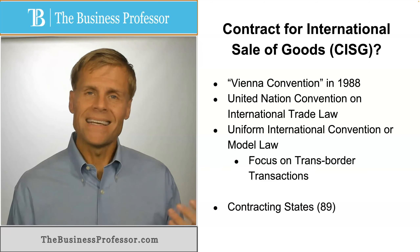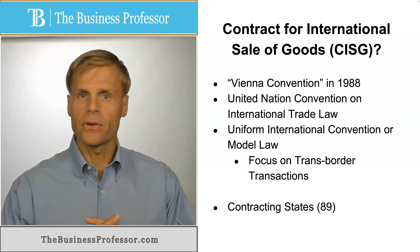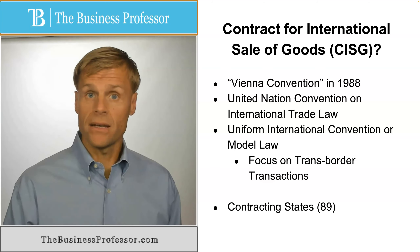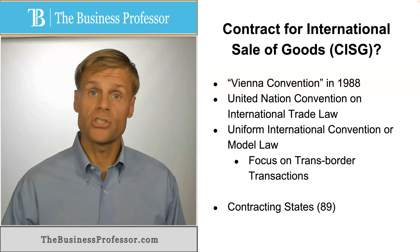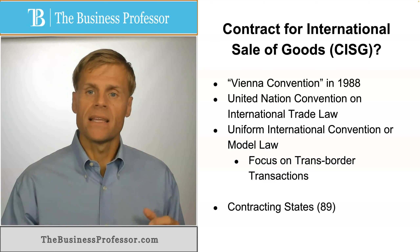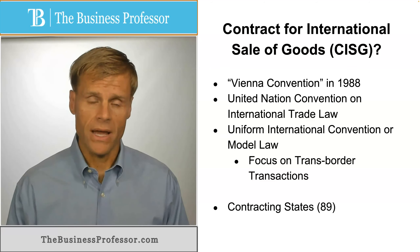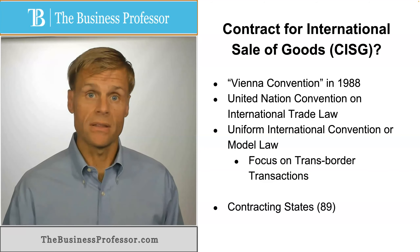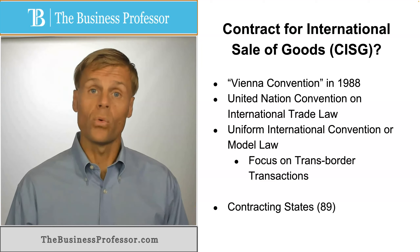The benefit of the CISG is that it provides a framework where otherwise no singular framework exists. It is popular in many commercial transactions between any number of nations, and is generally considered the standard or go-to set of provisions for contracts between parties from signatory or contracting states. There are approximately 87 to 89 member states that have signed on to the CISG as the governing model law for international contracts. Countries that are not signatories will oftentimes also adopt the CISG as the model law for their agreements.